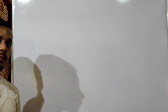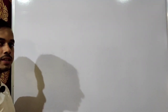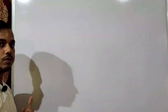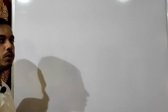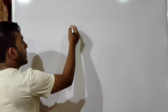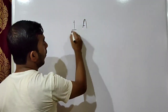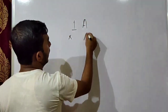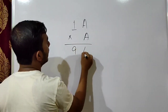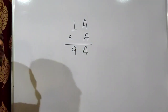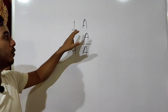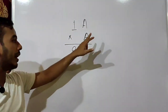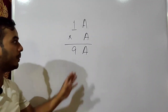Now let us take a different type of example where we have to multiply to find the value of the digits. The question is: 1A multiplied by A gives result 9A. We have to find the value of A. Note that if we put any number in place of A, the same number must appear in all positions.